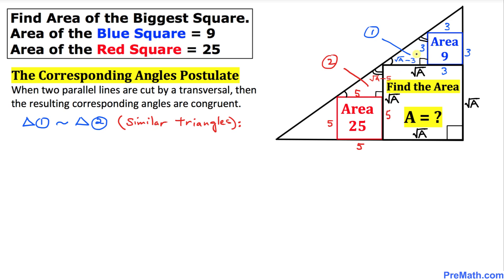Since they are similar triangles, I can write a proportion. The ratio is 3 divided by square root of a minus 3, equal to square root of a minus 5 divided by 5.